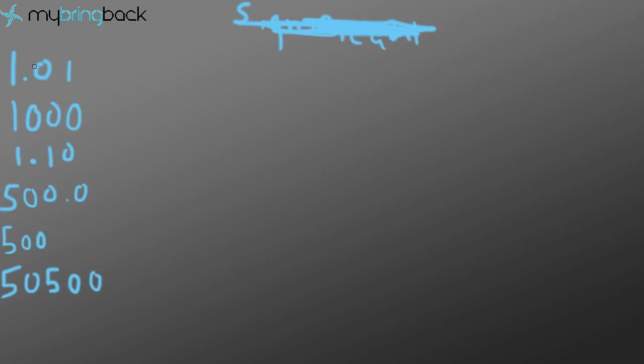Basically, when we have some information given to us — like the force of something, the mass of something — it's going to give us some numbers, like 1.01 meters. Anything with a decimal place is pretty easy to figure out the number of significant figures. For example, 1.01 has three significant figures: 1, 0, and 1. The problem comes when we have a whole number that doesn't have a decimal place and has some zero values. For example, 1000 only has one significant figure — the 1 is the only one that counts.